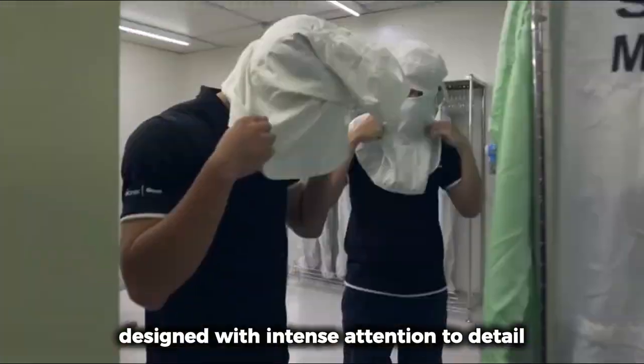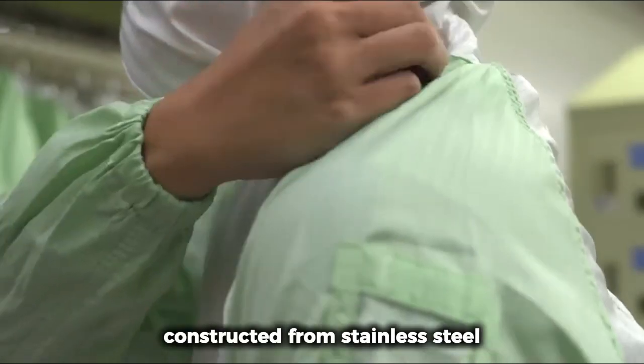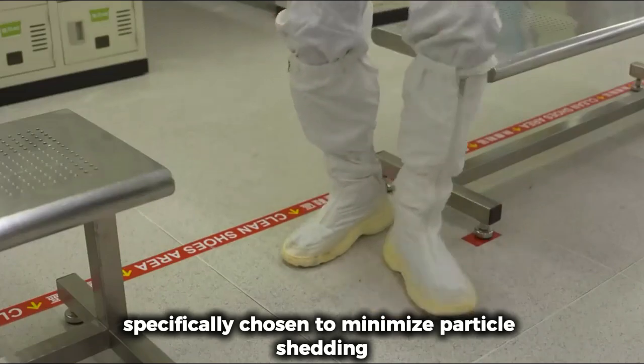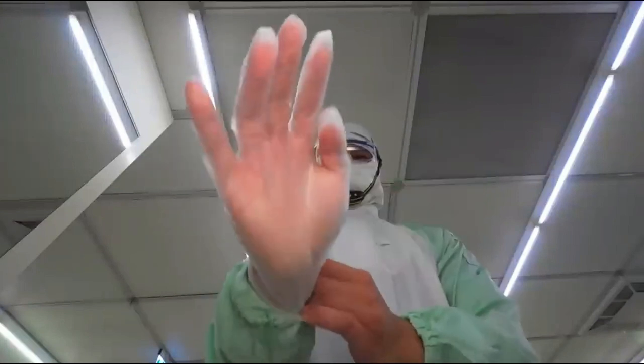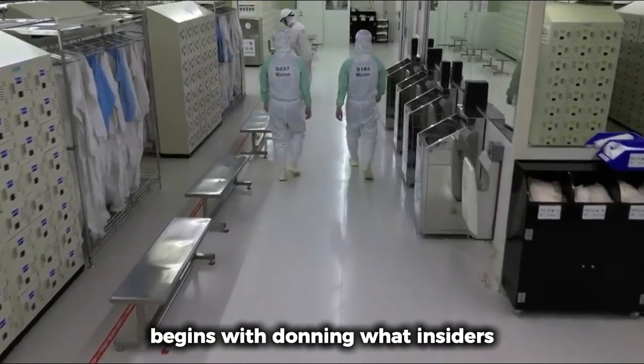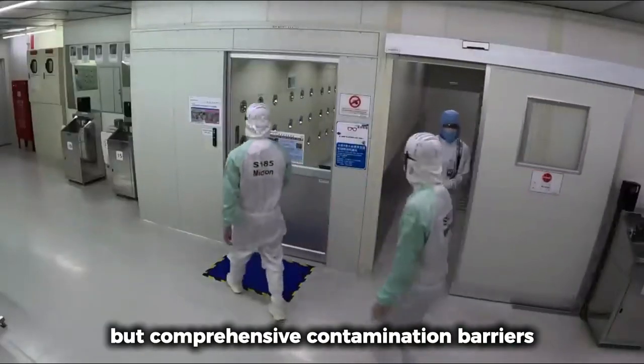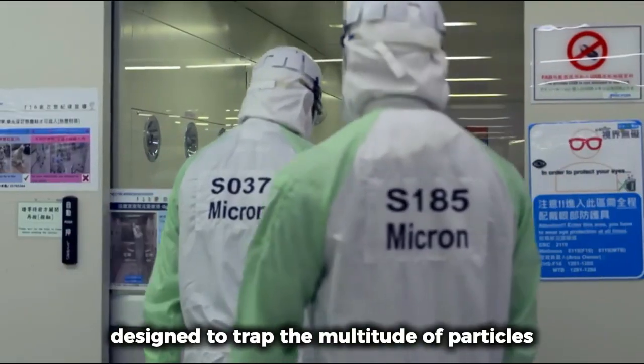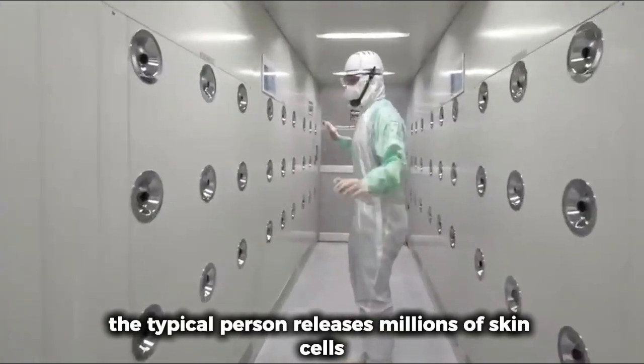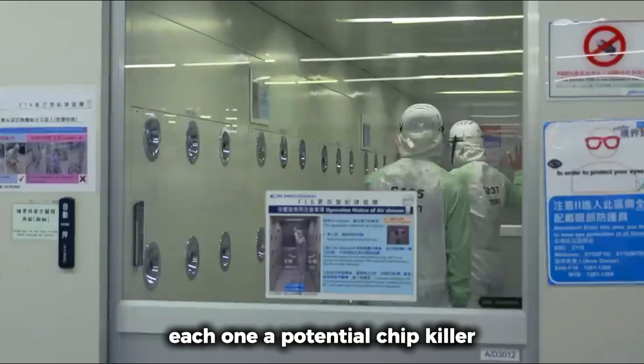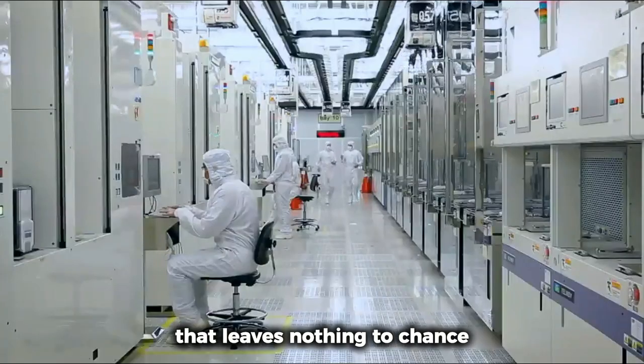Within these pristine chambers, semiconductor components measuring mere nanometers are constructed with atomic precision. At this scale, a particle that might seem insignificant in any other context transforms into a mountain-sized obstacle capable of destroying entire batches of wafers. Imagine you're preparing to enter this sanctum of cleanliness. First you'll encounter what's known in the industry as the gowning room, a transition space designed with intense attention to detail. Even the furniture here reveals the commitment to extreme cleanliness, constructed from stainless steel specifically chosen to minimize particle shedding.